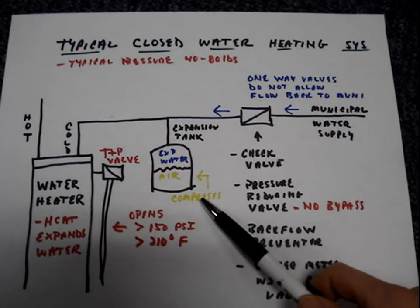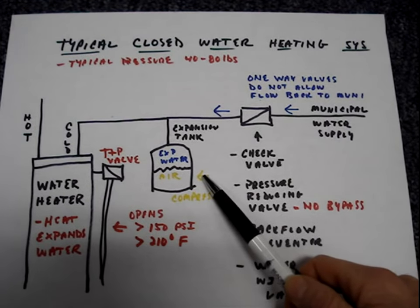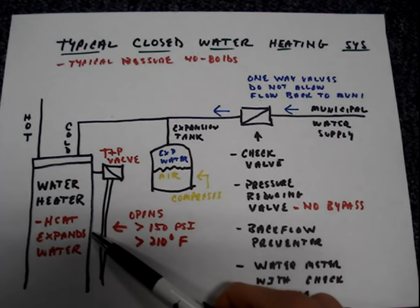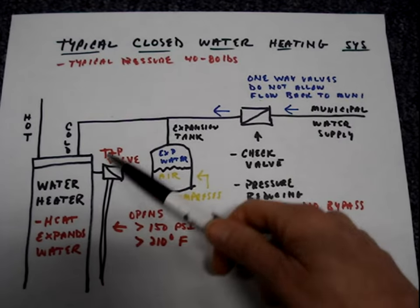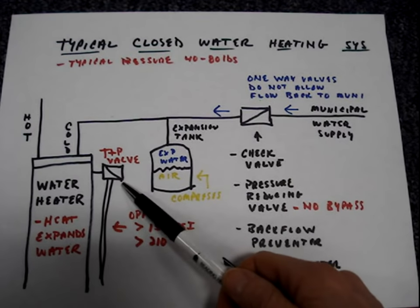If the expansion tank doesn't have any air in it, or a closed water heating system doesn't have an expansion tank, whenever there is thermal expansion and the pressure in the system increases above 150 psi, then the valve will open.